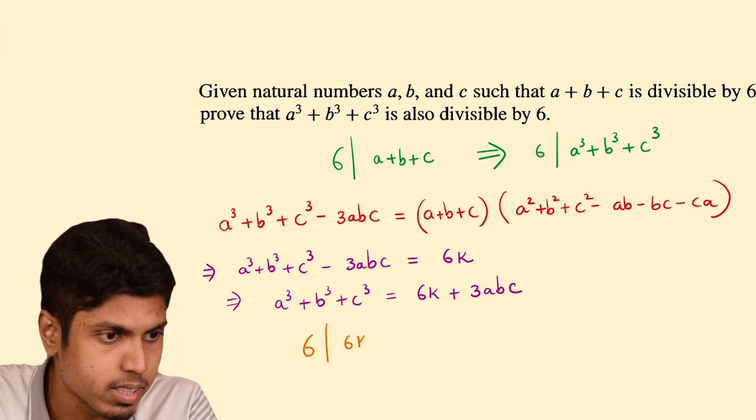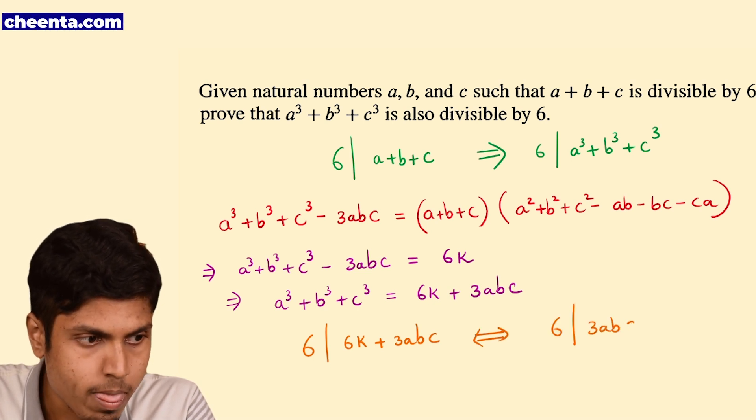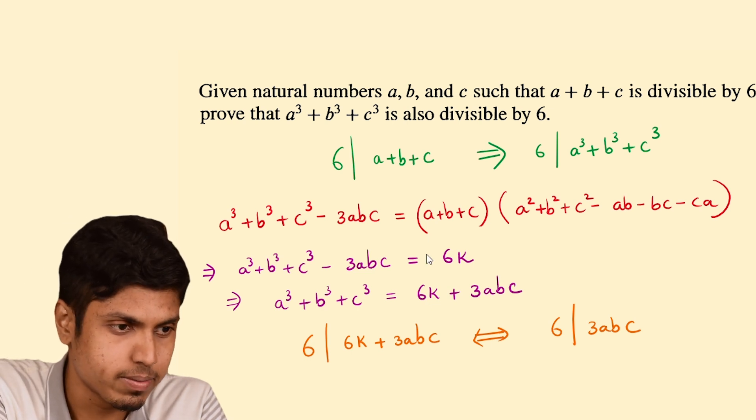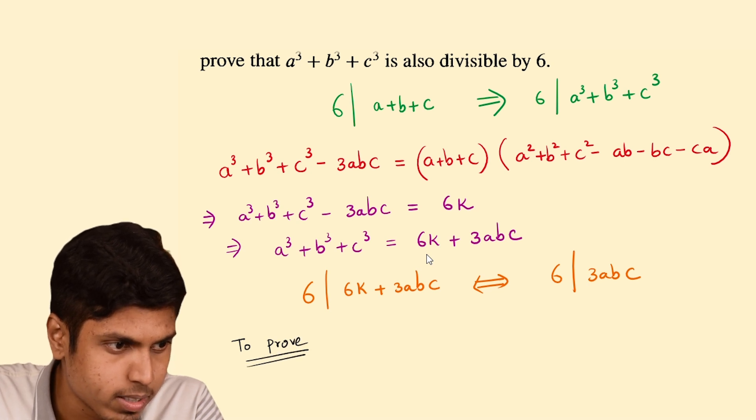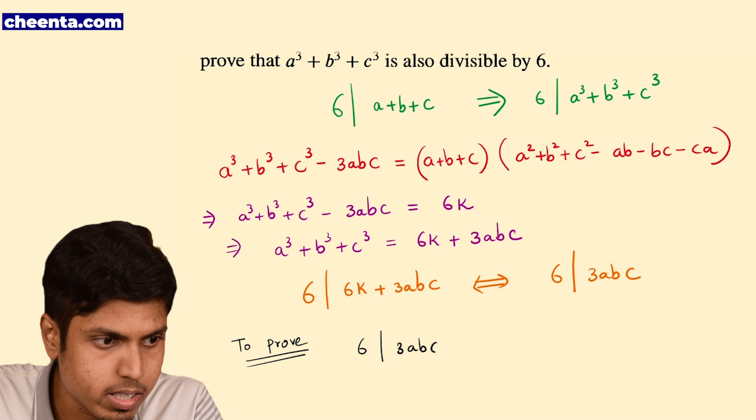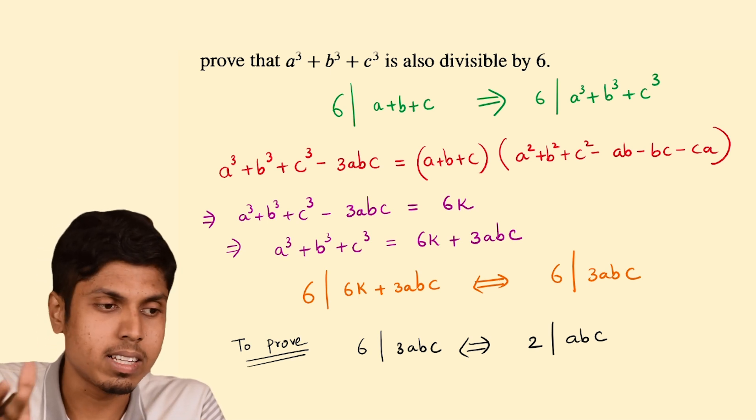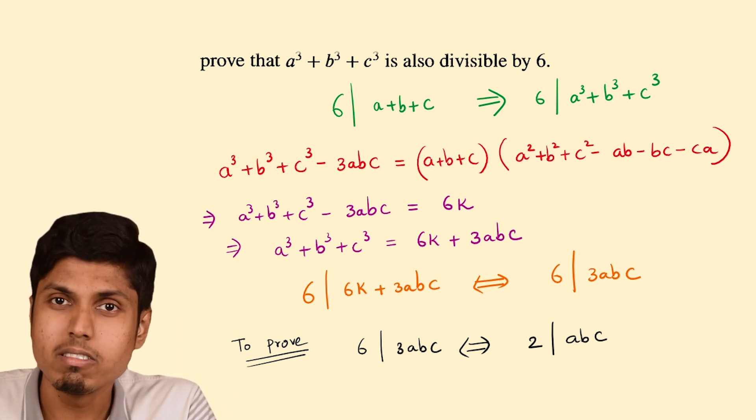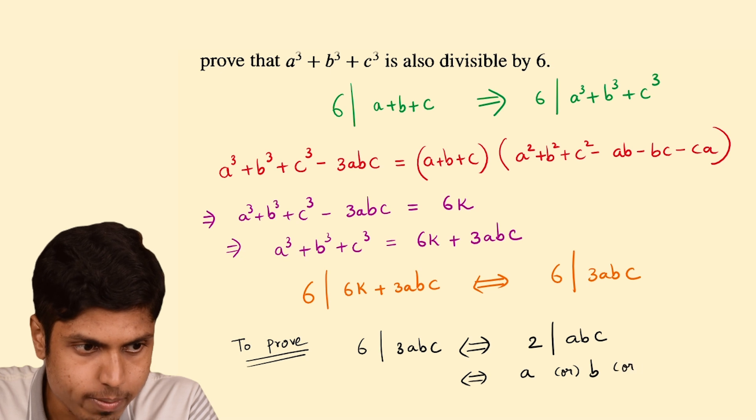Now, 6 divides 6k plus 3ABC. But that would be true if and only if 6 divides 3ABC because 6k is already divisible by 6 and whatever you add to the 6k should be a multiple of 6. Hence, we just need to prove that the to prove statement goes as follows: 6 divides 3ABC which is equivalent to proving that 2 divides ABC because 3 and 6 cancels out and that leaves the residue of 2, and 2 should divide ABC which in turn is true if and only if A or B or C is even.